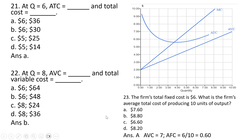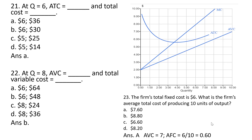Question 23. The firm's total fixed cost is $6. What is the firm's average total cost of producing 10 units of output? At 10 units of output, average variable cost is $7. The total fixed cost is $6, so average fixed cost is 6 divided by 10, or 60 cents. Average total cost is average variable cost plus average fixed cost — $7 plus $0.60 equals $7.60.